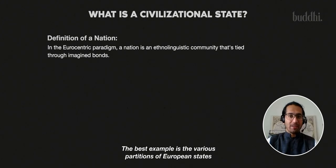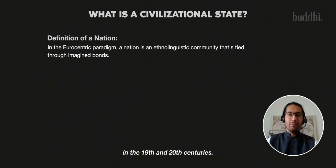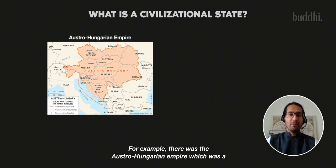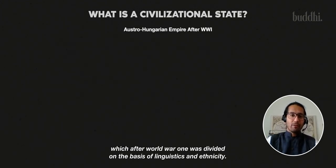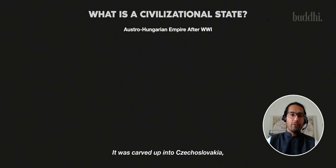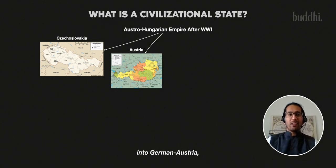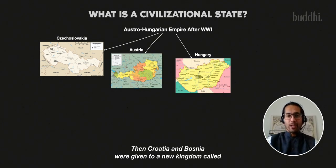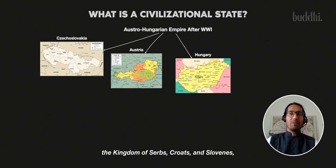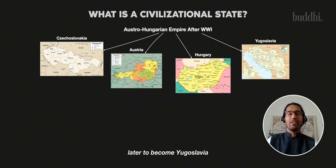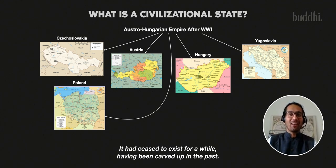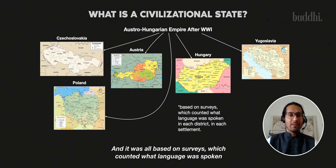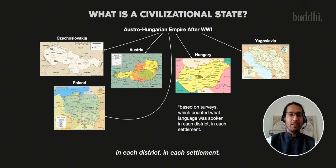The best example is the various partitions of European states in the 19th and 20th centuries. There was the Austro-Hungarian Empire, which was a multinational, multilinguistic, multiethnic composite monarchy, which after World War I was divided on the basis of linguistics and ethnicity. It was carved up into Czechoslovakia, into German Austria, into a rump state of Hungary. Croatia and Bosnia were given to a new kingdom called the Kingdom of Serbs, Croats and Slovenes, later to become Yugoslavia. Poland was also resurrected from the ashes. It was all based on surveys counting what language was spoken in each district and each settlement.